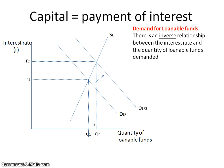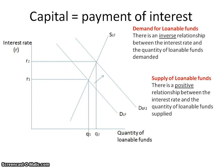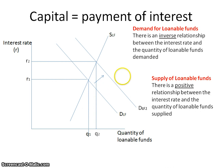The supply of loanable funds is generally provided by households through savings. The demand comes from businesses, and the supply comes from households through their savings. There is a positive relationship between the interest rate and the quantity of loanable funds supplied, meaning that there is an increase in the supply of loanable funds as the interest rate goes up. Because if I supply my loanable funds, the bank is going to pay me a higher interest rate. The supply curve, if you look at that graph, you'll notice is relatively inelastic, and thus it's not that responsive to a change in the interest rate as it would be if it were more elastic.